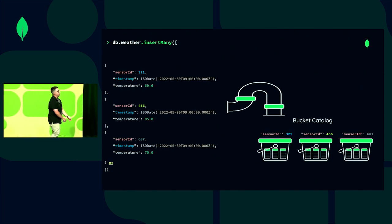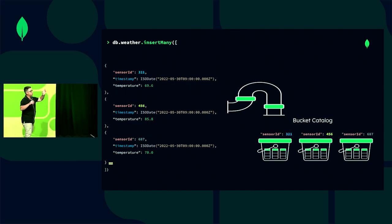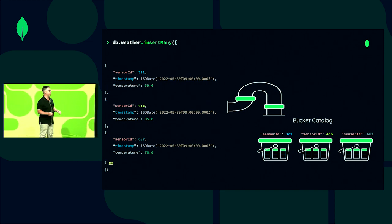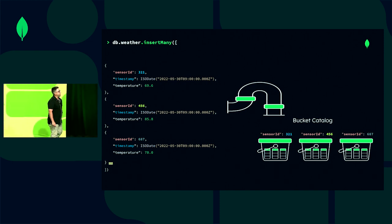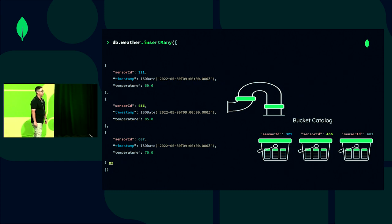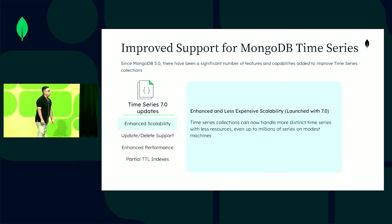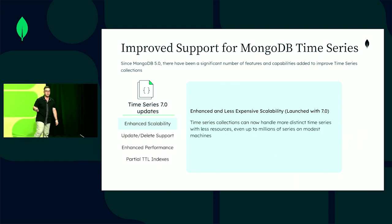In versions 5 and 6, this was a simple LRU cache using 2.5% of your total physical RAM. With three unique sensor IDs inserting, they get transformed into buckets — those buckets are being created. However, in 7.0, one of our marquee releases is enhanced scalability, making it easier and less expensive to scale for high-cardinality workloads.